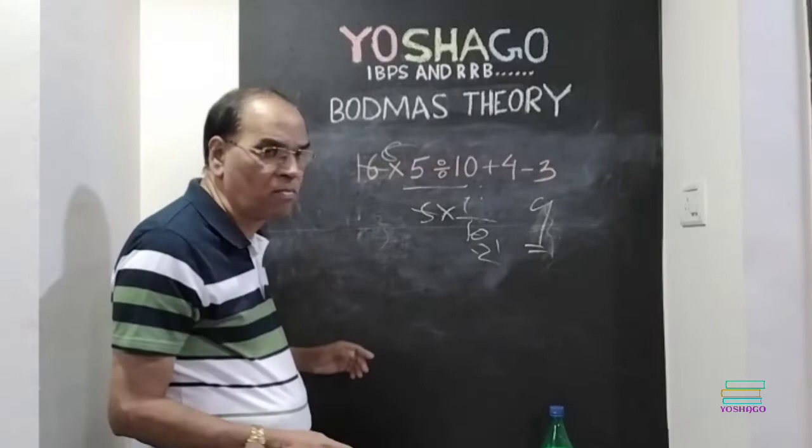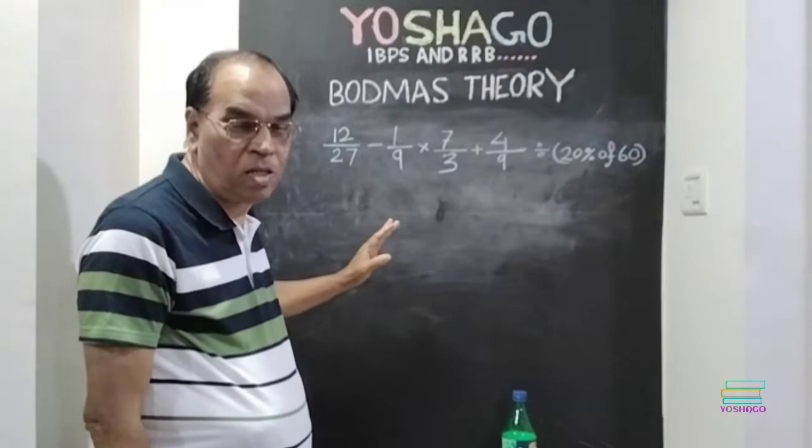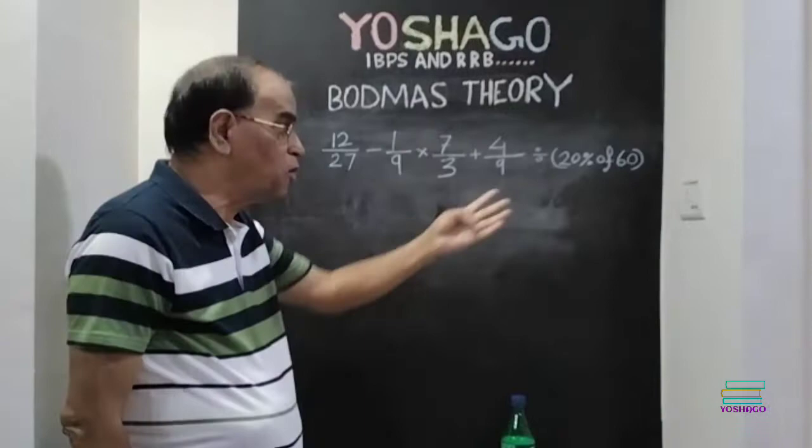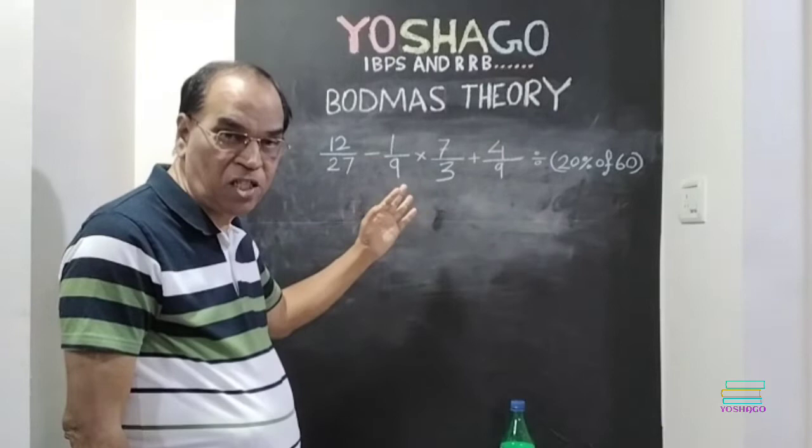Now, one more problem. In this problem, all signs are included. BODMAS. Bracket is also there. Of is also there. Division is also there. Multiplication is also there. Addition is also there. Subtraction is also there. BODMAS.